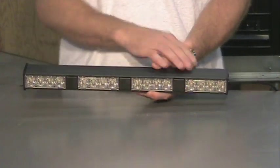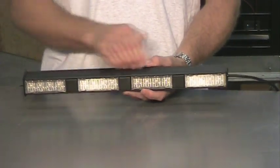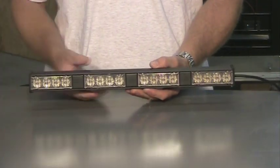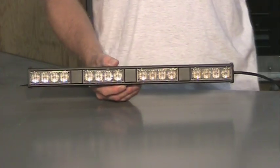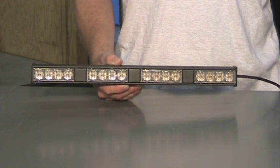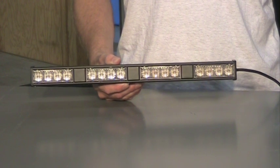They use a composite housing, composite outer covers, and an aluminum heat sink inside the unit. All the units have built-in flash patterns, built-in flasher. They have synchronized capabilities and they're covered by a two-year warranty.